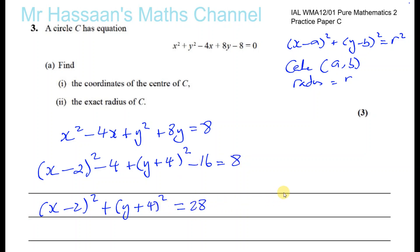Now I've got it in the form that I need. The center of the circle will therefore be the x value that makes this bracket 0, which is x equals 2, and the y value that makes this bracket 0, which is y equals minus 4. That's the center.